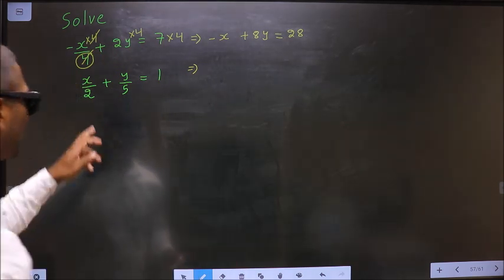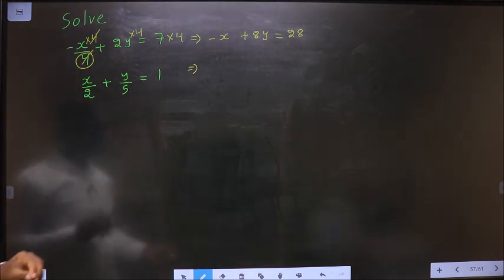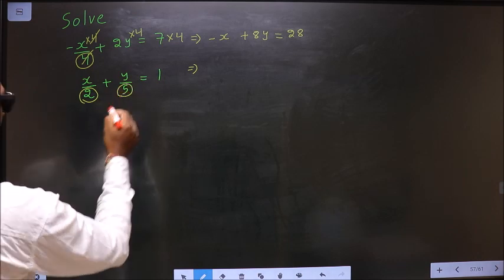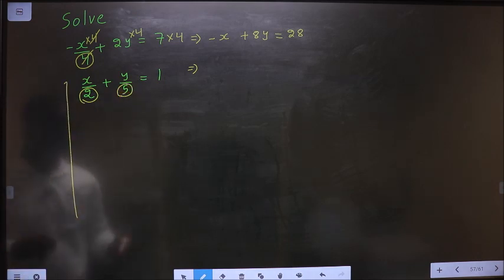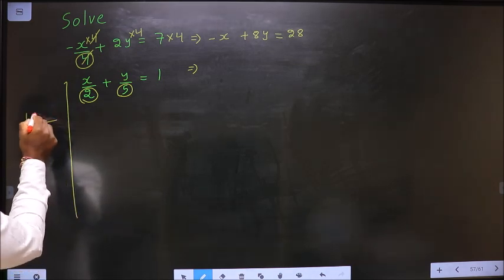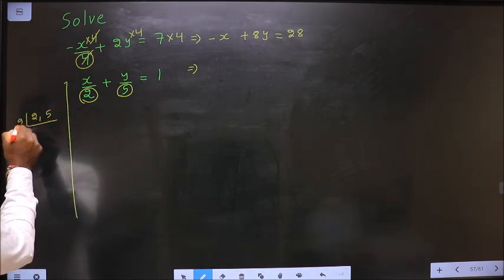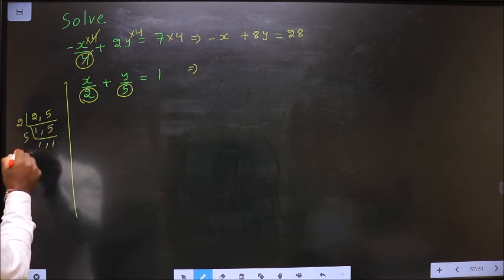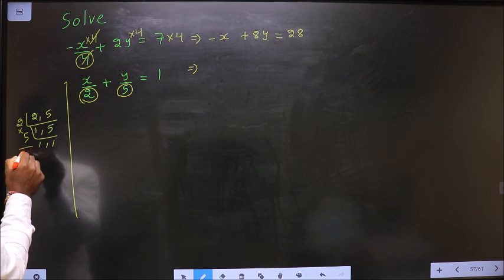Okay, now, in this equation, to get rid of the denominators 2 and 5, first you take LCM of the denominators. That is 2 and 5. So LCM is 10.